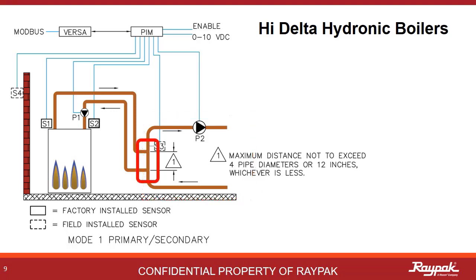The place where the two loops overlap is called the decoupler. The decoupler is the magic of a primary-secondary system. When built properly, this will allow the bigger system pump to run when the boiler is not running without forcing water through the boiler.